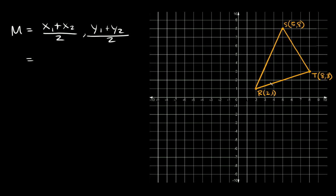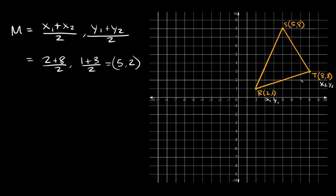So the midpoint here — let's say R is (x₁, y₁) and T is (x₂, y₂). The midpoint is equal to (2 + 8)/2 for x, and (1 + 3)/2 for y. So 2 + 8 is 10, divided by 2 is 5. And 1 + 3 is 4, divided by 2 is 2. So the midpoint between these two points is at (5, 2) — this is the midpoint of this side.